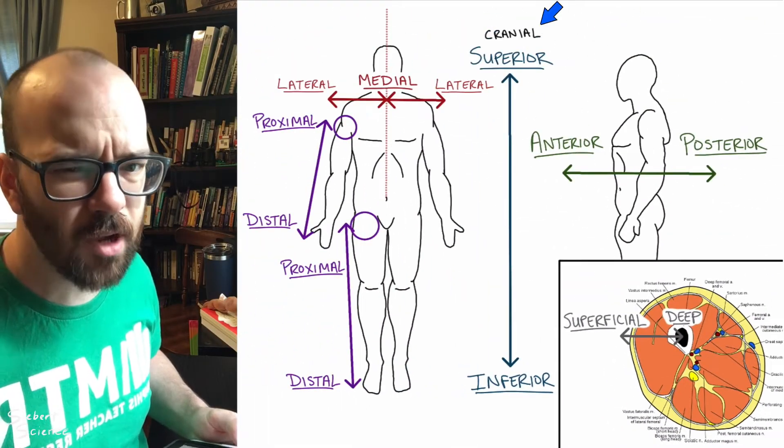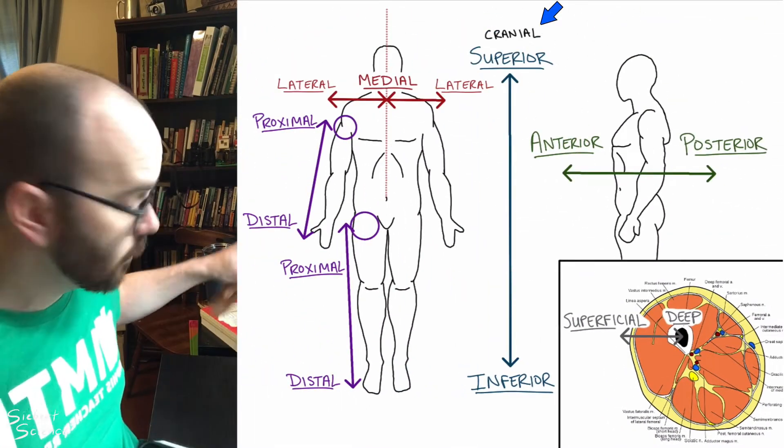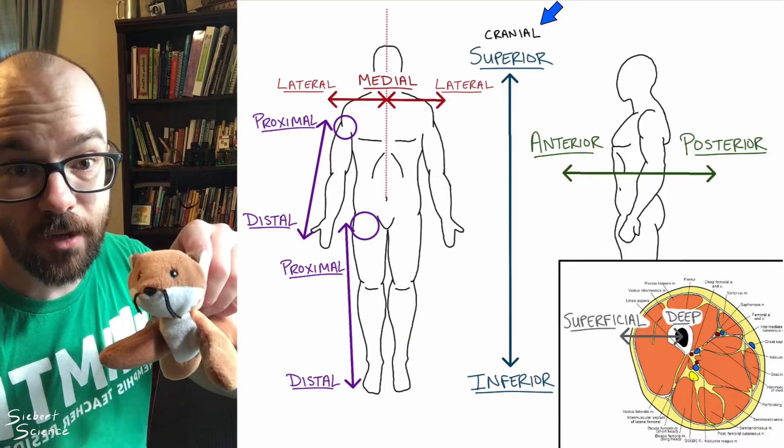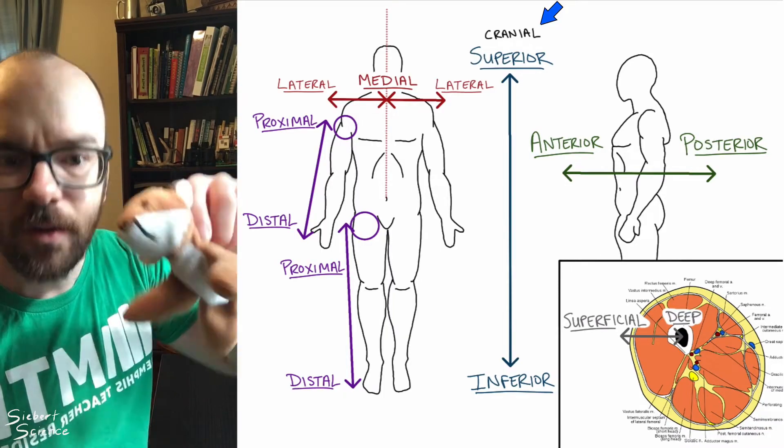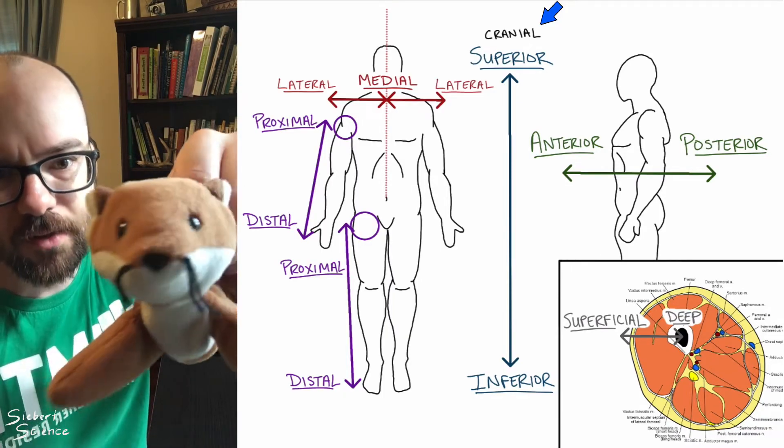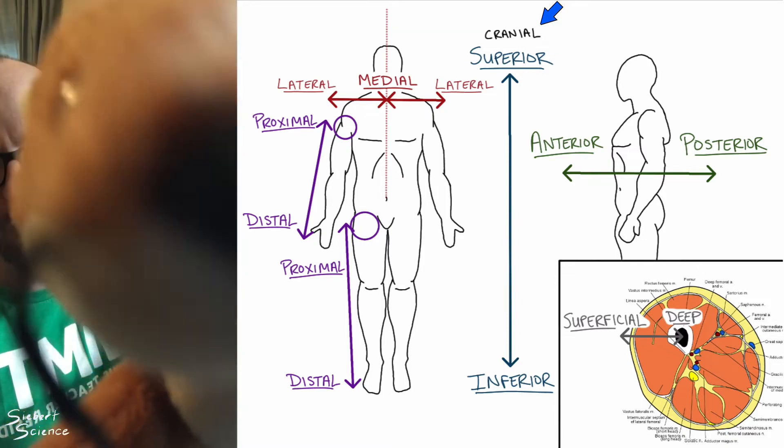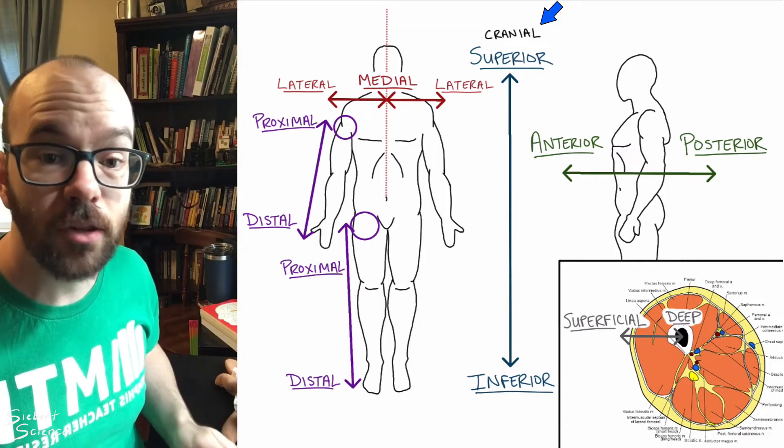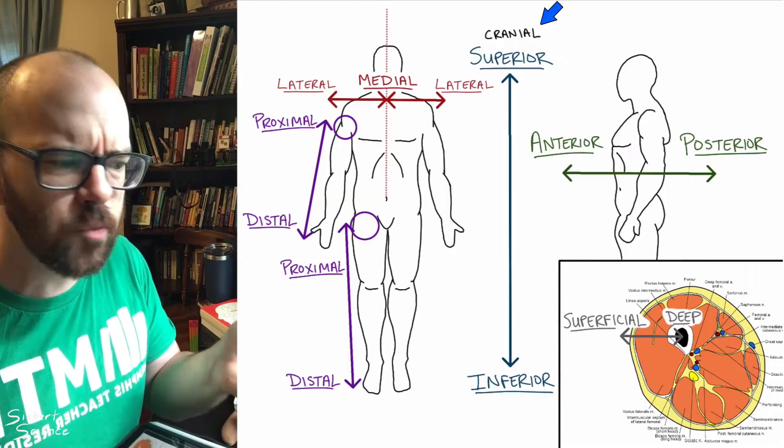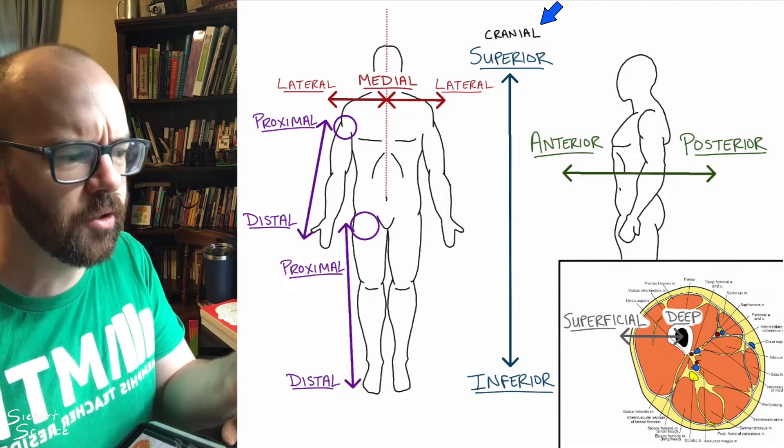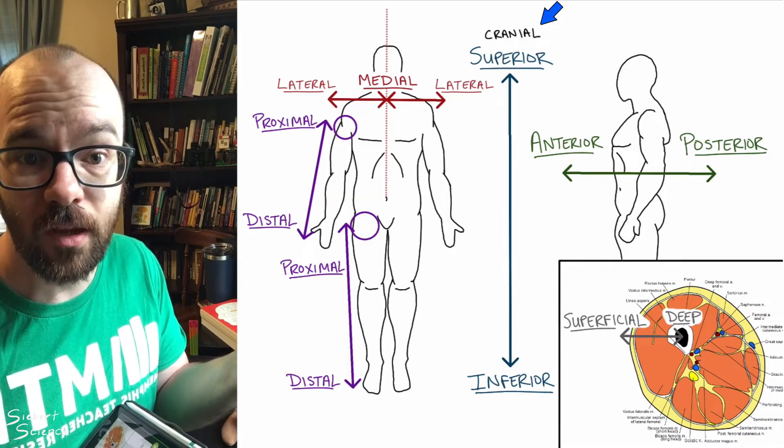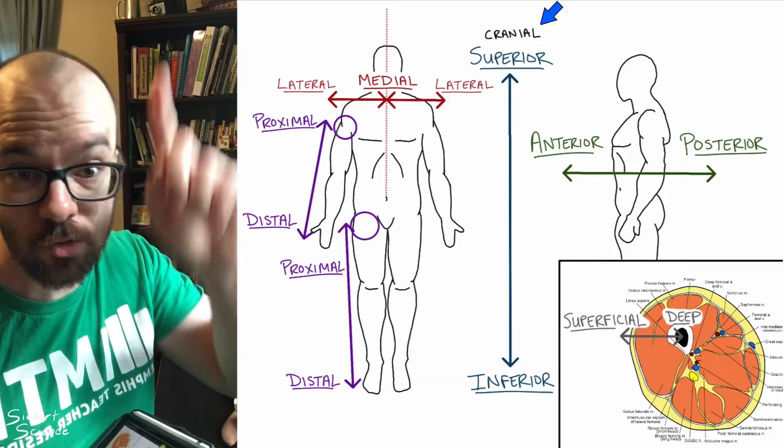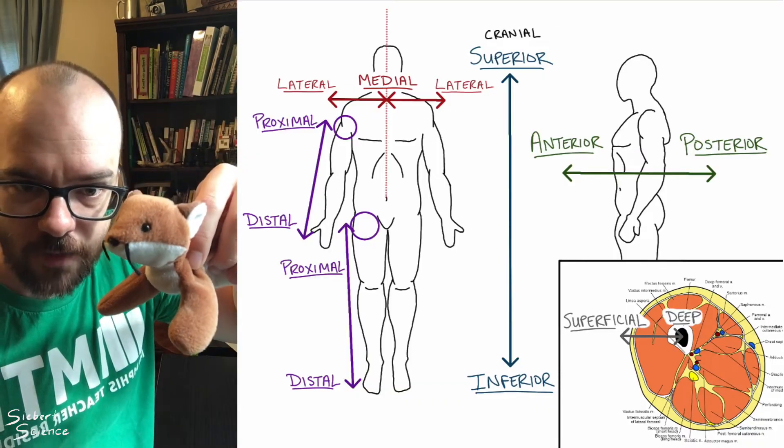Now we've got a couple more terms that are kind of repeats here. I'll use Sly here to help us understand why we have those repeat terms. Sly was my favorite beanie baby when I was a kid. Say hi, Sly. The first one's cranial. Cranial literally just means toward the head. For humans in anatomical position, cranial and superior are the same thing. They both mean this direction, which is toward the head. But for Sly, that's not the case.